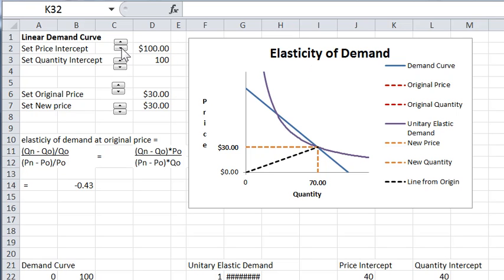Let's start by looking at these buttons. It says set the price intercept and set the quantity intercept for the linear demand curve. This downward sloping blue line is the demand curve.